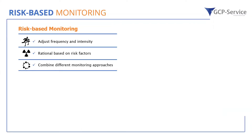To briefly summarize: risk-based monitoring is a way of adjusting the frequency, intensity, and type of monitoring we do. It is rationalized based on risk factors determined beforehand and monitored — and adapted — during the conduct of your trial. It combines different types of monitoring approaches: on-site monitoring, remote monitoring, and statistical or centralized statistical monitoring approaches.